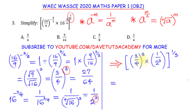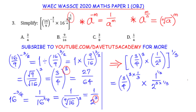Now I observe that the power 3 and 1 over 3 cancel each other out in both terms. So my solution simplifies to 3 over 4 multiplied by 1 over 2. That is 3 times 1 over 4 times 2, which equals 3 over 8. Looking at the options, you can see option C is 3 over 8, and that is the solution.